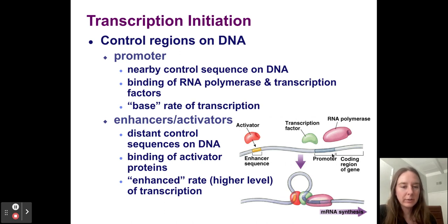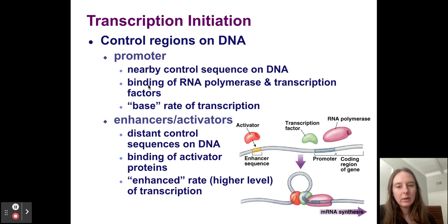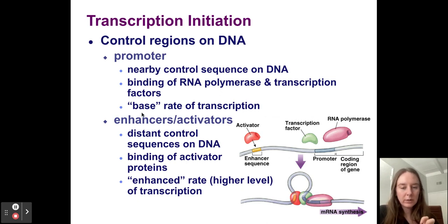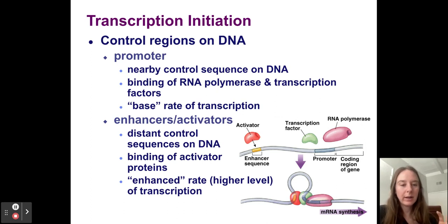Basically, the transcription factor increases the affinity of RNA polymerase to bind to DNA. RNA polymerase is floating in the nucleus; the transcription factor draws it in to bind more quickly so we can start transcribing. Without a transcription factor, RNA polymerase would be less likely to bind. We call this the base rate of transcription — how much messenger RNA is transcribed in a certain amount of time. But what if we want to increase the rate of transcription — an enhanced rate?